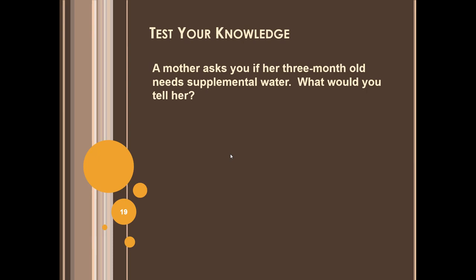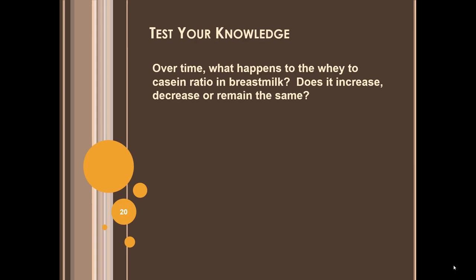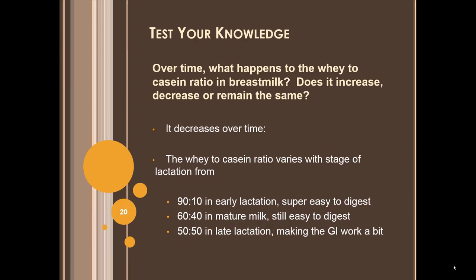Test your knowledge: A mother asks if her three-month-old needs supplemental water. Breast milk satisfies all water requirements — if babies are thirsty, breastfeed, as the foremilk will supply their water needs. Over time, what happens to the whey-to-casein ratio in breast milk? It decreases over time, varying from 90–10 in early lactation — super easy to digest — to 60–40 in mature milk, and 50–50 in late lactation, making the GI work a little bit.